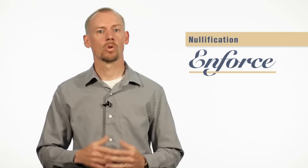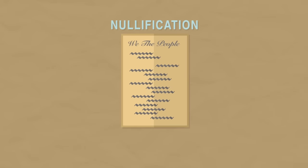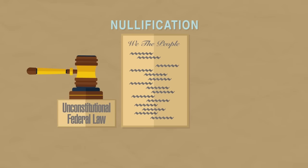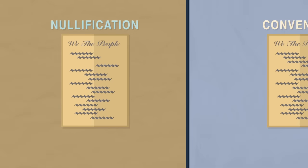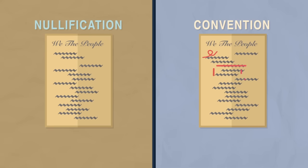So what is the difference between nullification and an Article 5 convention? With nullification, the Constitution is left intact. With this tool, states can refuse to enforce unconstitutional federal laws. With the convention, the Constitution would be changed, either by a single amendment, a series of amendments, or possibly a complete rewrite that would destroy what our founders gave us.